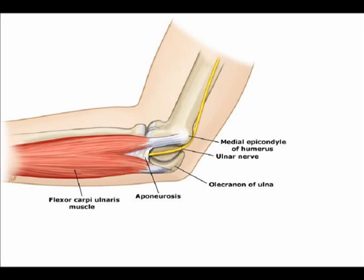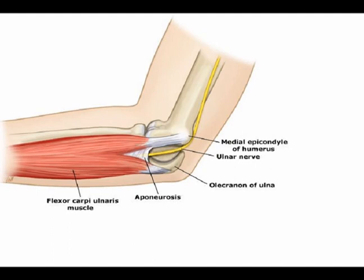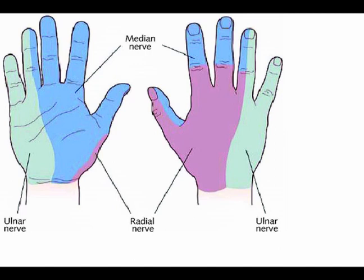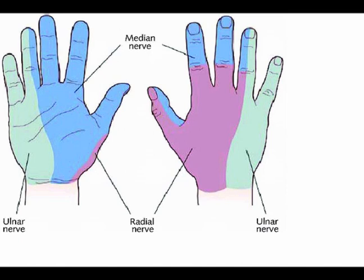Cubital tunnel syndrome is also known as ulnar neuropathy at the elbow. It is the second most common upper extremity entrapment, second only to carpal tunnel syndrome. It involves compression of the ulnar nerve in the cubital tunnel of the elbow, and there is often a contributory component from the nerve being tractioned or stretched. The ulnar nerve can be compressed at multiple points along its course, but the most common location is at the elbow. Cubital tunnel syndrome is characterized by numbness, tingling, burning, and weakness in the fifth finger and the medial half of the fourth finger.